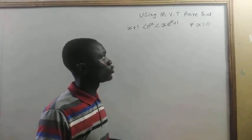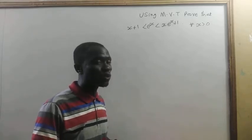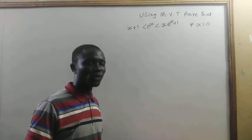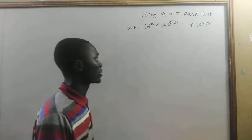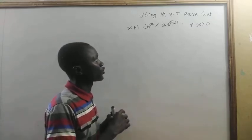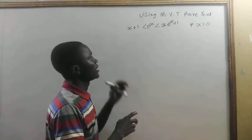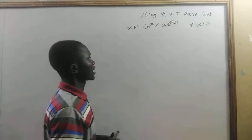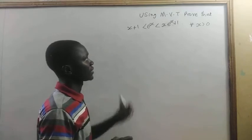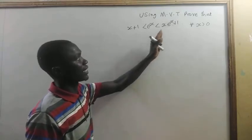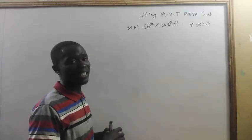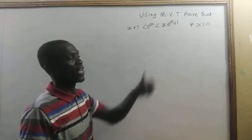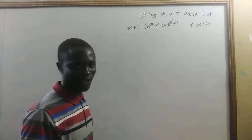In this lesson we are going to prove an inequality using the Mean Value Theorem. Let's look at the question. Using the Mean Value Theorem, prove that e to the power x is greater than x plus 1 and less than x times e to the power x plus 1, for all x greater than 0.